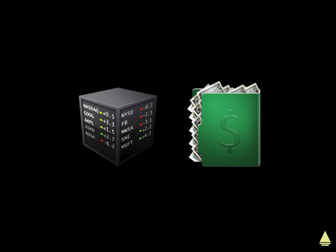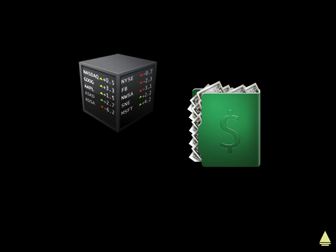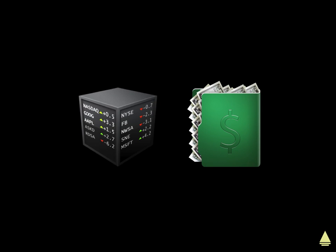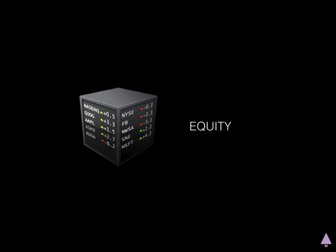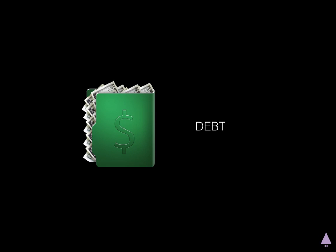We have two main types of capital markets: the stock market and the bond market. The stock market is used to trade public equity, and the bond market is used to trade public debt.